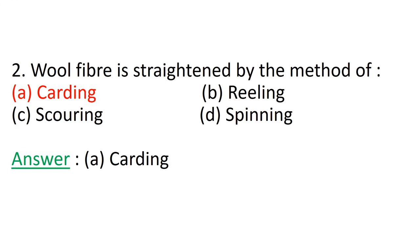Question number 2: Wool fiber is straightened by the method of A. Carding, B. Reeling, C. Scoring, D. Spinning. If you have marked option A as the correct answer, then you are right. Because carding is the process which is used to straighten the fibers and it removes unwanted matter. In this process, the wool fibers are passed through rollers.